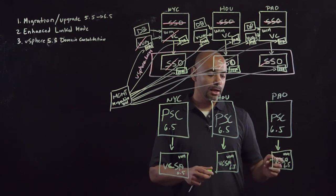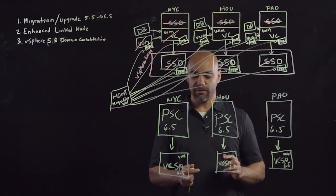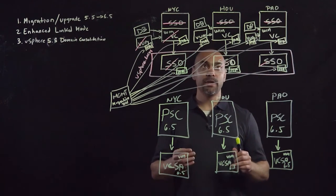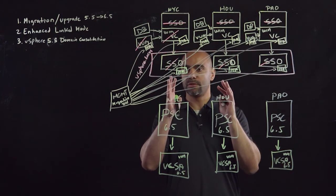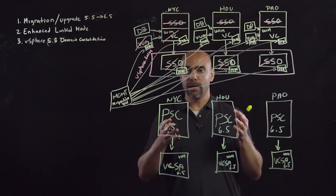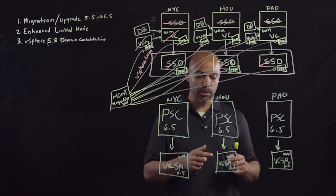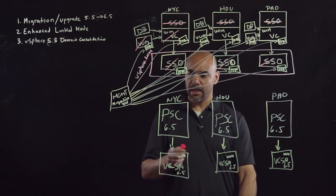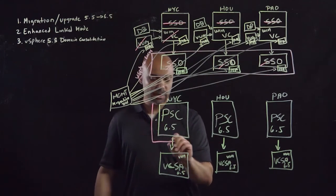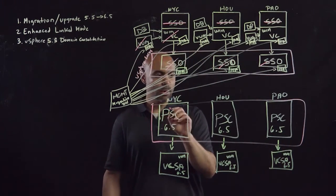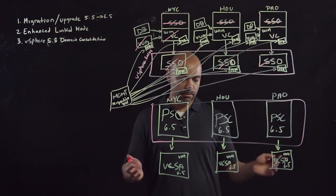So now we have a consolidated SSO domain. We have migrated from a Windows type deployment, embedded or whatnot, but we've gone to an appliance based where we also accomplished getting to enhanced link mode. So now when I log into any one of the web clients here, I'll be able to manage any of my vCenter servers. So for example, if I log into NYC, I'll be able to see the vCenter in NYC, as well as Houston, as well as Palo Alto and manage them as well. So that covers our goals today.